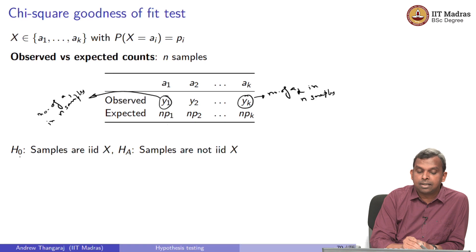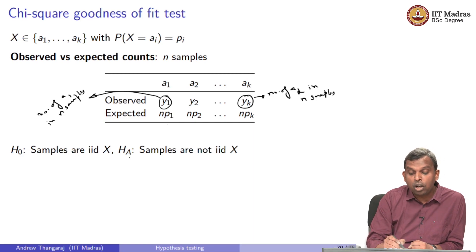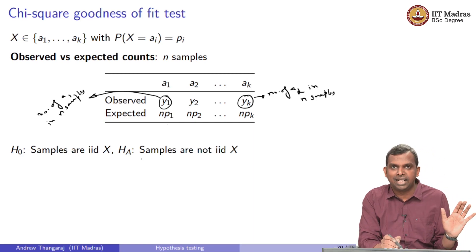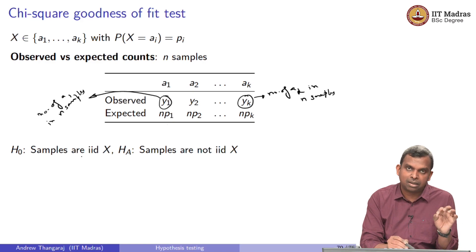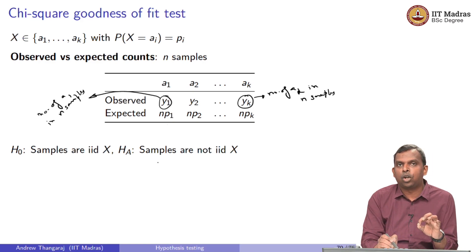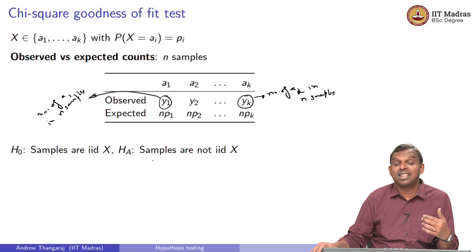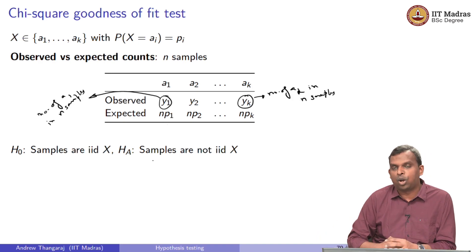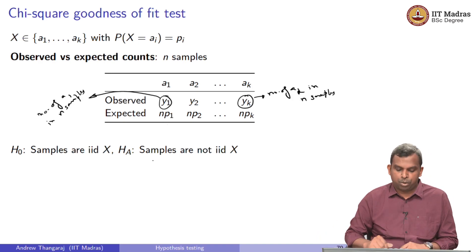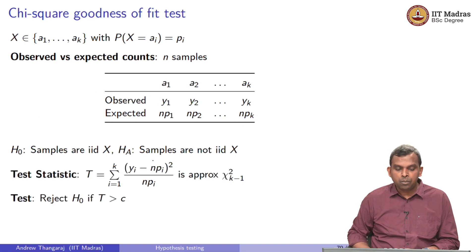Now I can have a null hypothesis which says the samples are iid according to X, this distribution. The alternative is samples are not iid X. You see, you have a simple null and a composite alternative. And we can try and think of coming up with a test statistic and deciding whether or not this is true. So typical hypothesis testing problem.